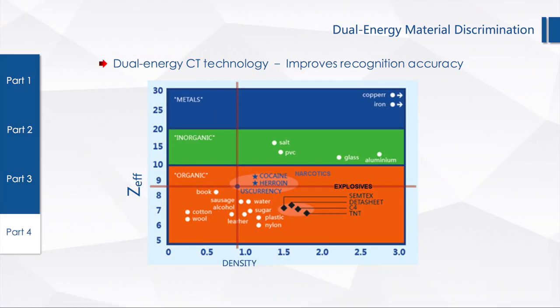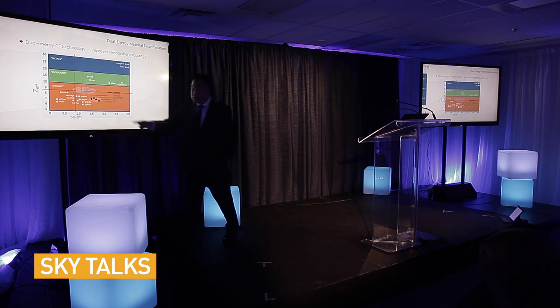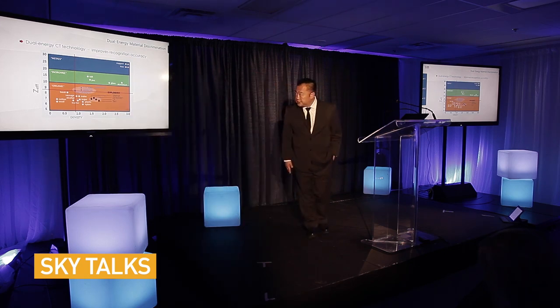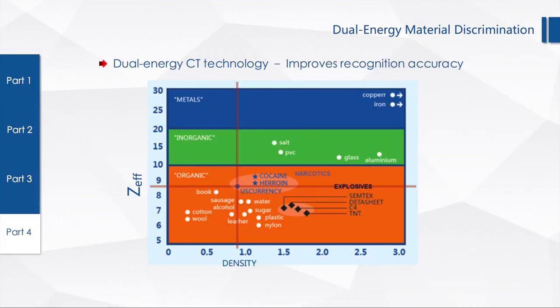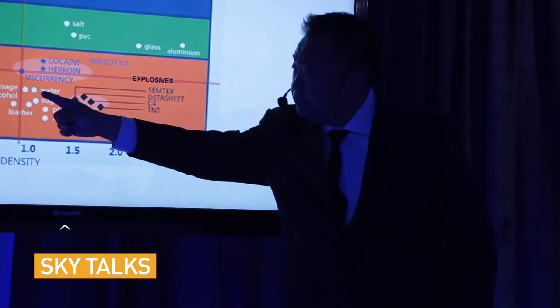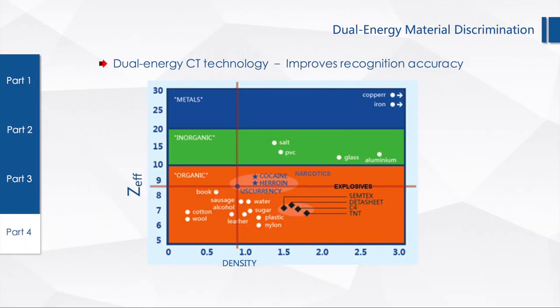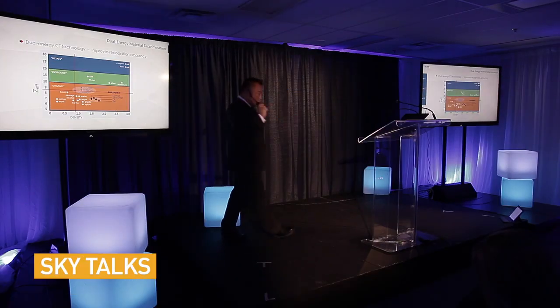This education graph shows that sausages and alcohol have about the same atomic number and the same density as some of the threats in the world, including explosives and narcotics. If you don't have a three-dimensional image or dual energy three-dimensional image, it is very difficult to differentiate between, say, water and Semtex. You need these two variables — dual energy gives you the atomic number, and CT technology gives you the density — and with that is how we can lock into a particular threat.